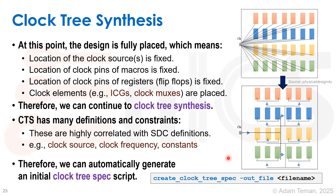I would say: don't just use the auto-generated spec directly. Run it once, see what it says, copy it to your own script, and make sure you understand what each and every command is doing — then add your own commands. It's very hard to explain in a course how difficult and complicated building a clock tree is, but there is a good reason all those commands exist for ccopt, which you can find in the user manual, because every design has a different clock tree with different constraints.